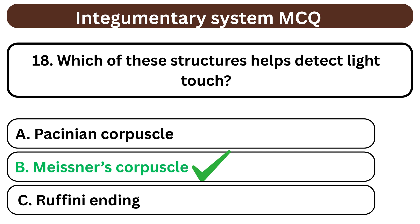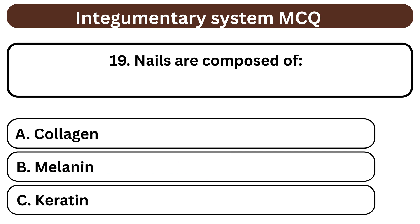Question 19. Nails are composed of A. Collagen. B. Melanin. C. Keratin. The answer is C. Keratin.